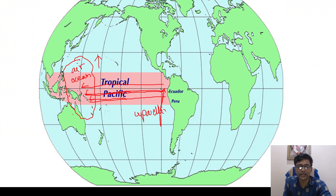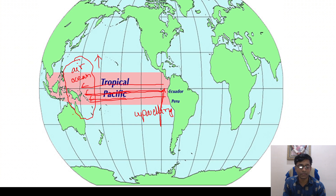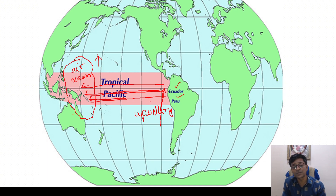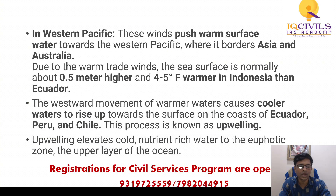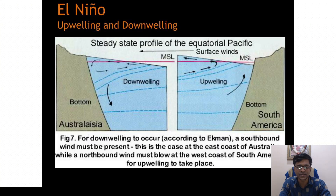Because of upwelling, nutrients present at the floor of the ocean come up to the surface. The increased percentage of nutrients on the surface of the eastern Pacific, off the coast of Peru and Ecuador, increases the fish population there. This increased fish population helps fishermen in Peru and Ecuador. So El Niño is beneficial for fishermen in Peru and Ecuador but is harmful for people in Australia, Indonesia, Philippines, India, and Southeast Asia. Upwelling elevates cold, nutrient-rich water to the euphotic zone — the upper layer of the ocean — which helps fisheries.